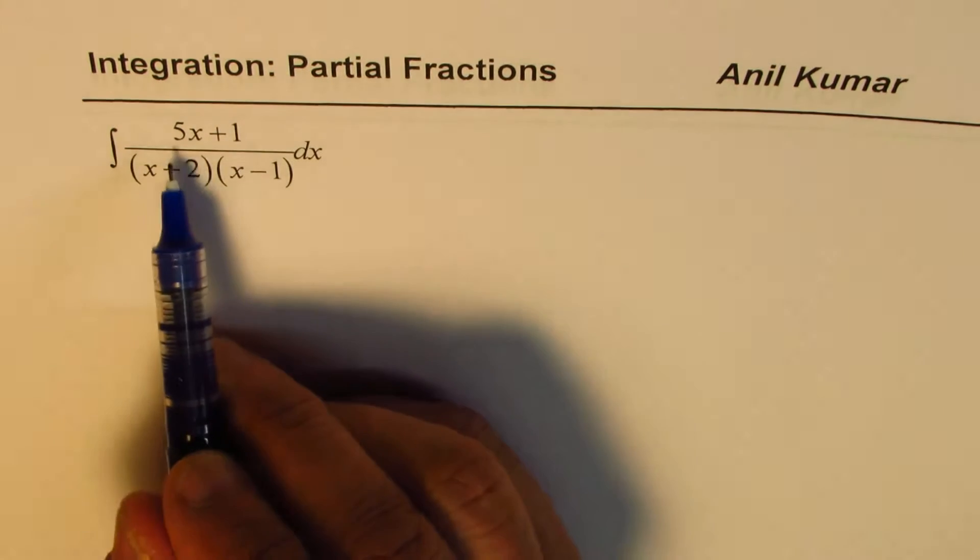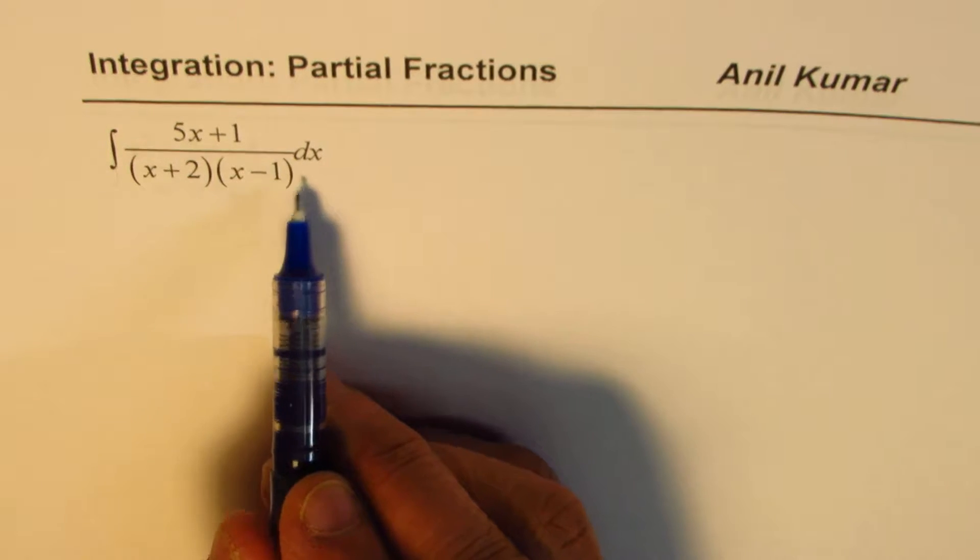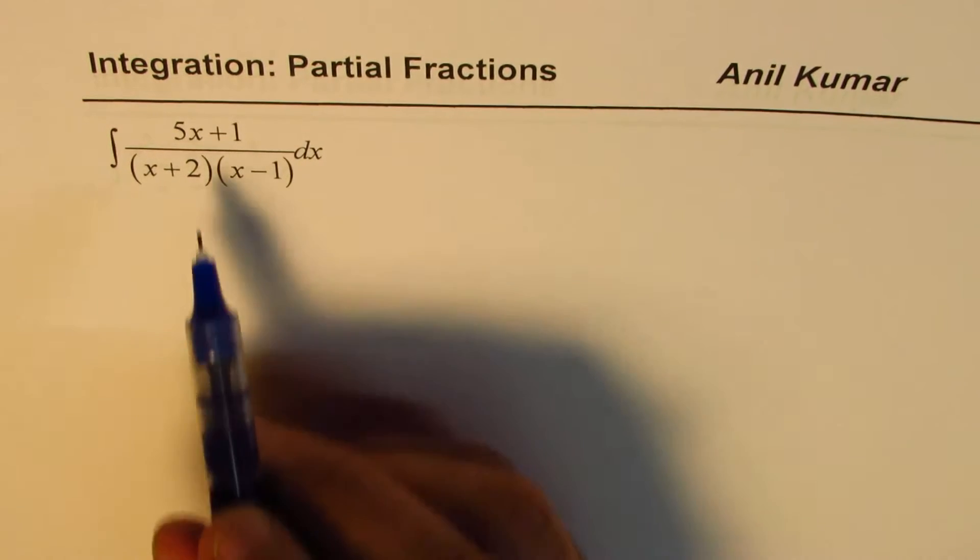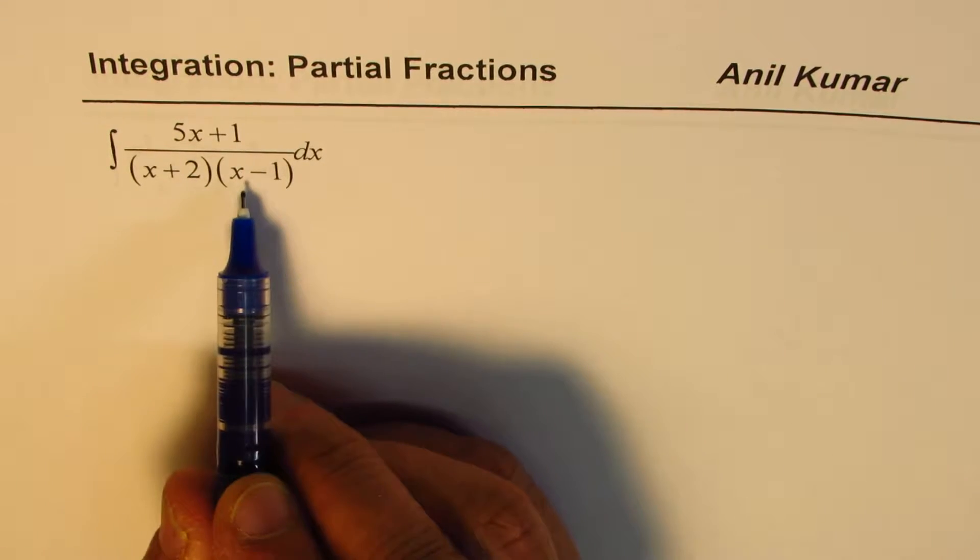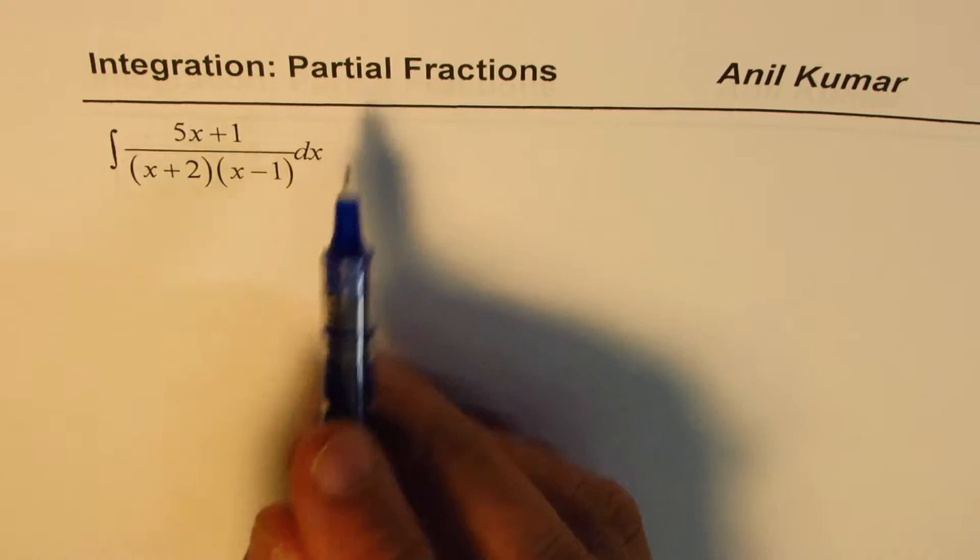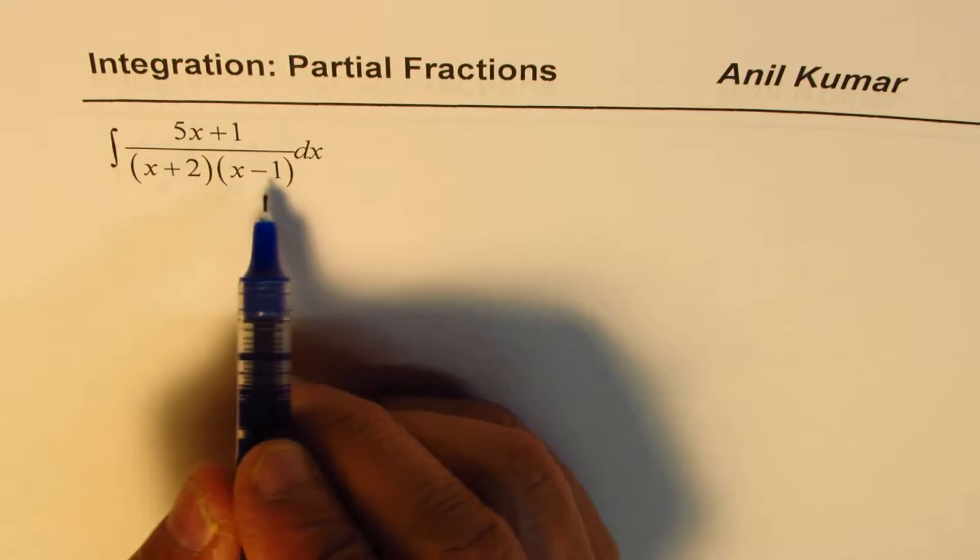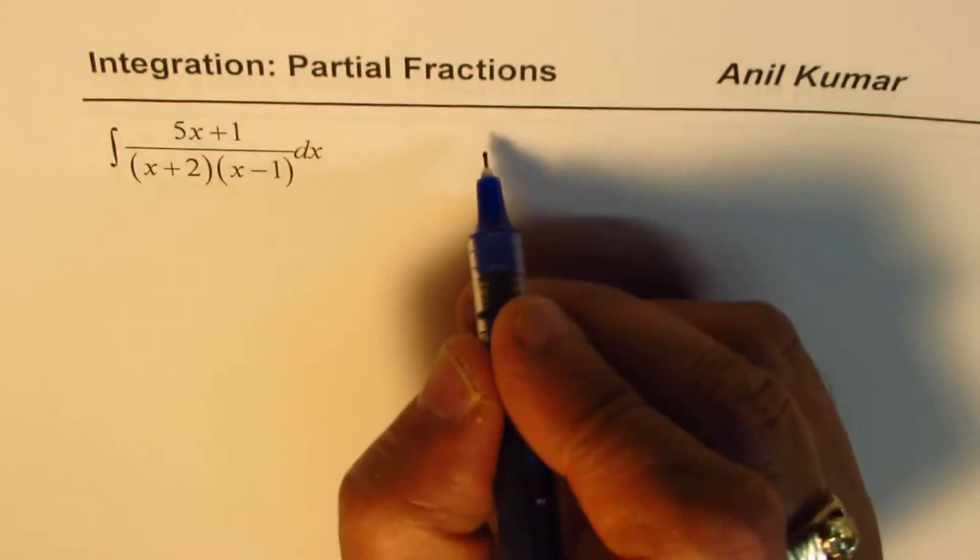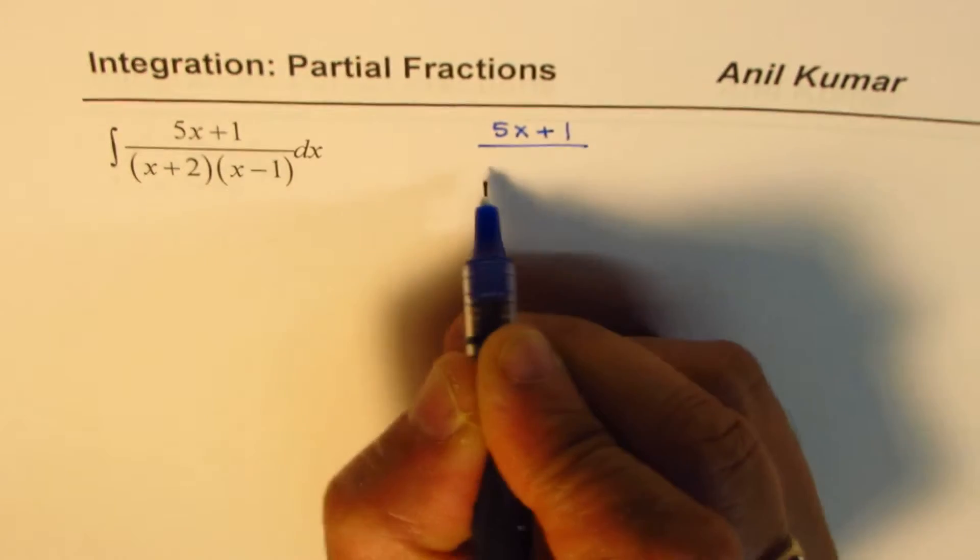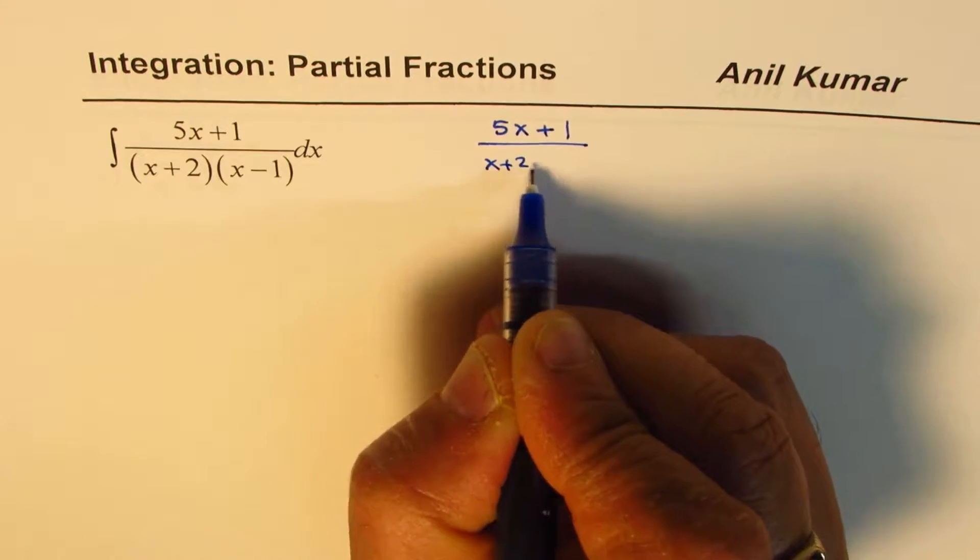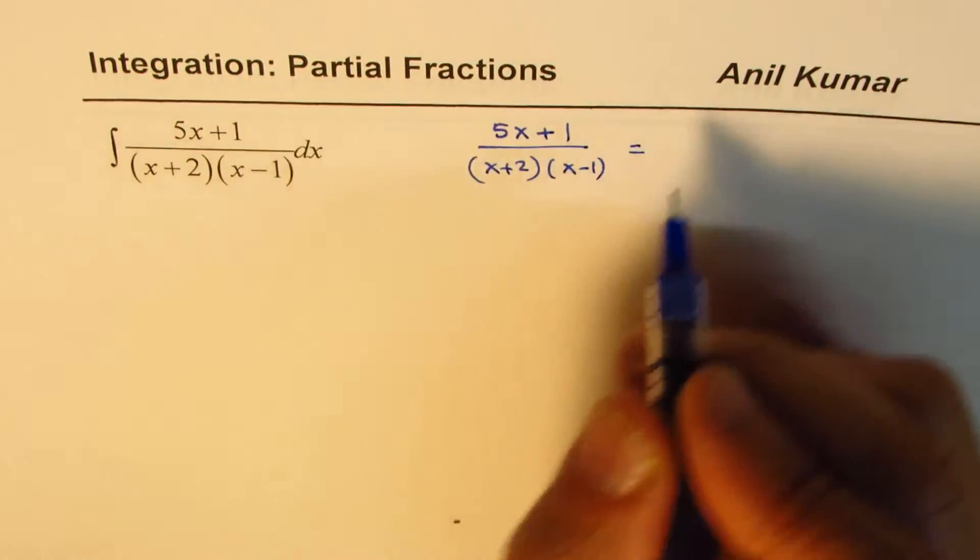We need to integrate 5x plus 1 divided by x plus 2 times x minus 1 dx. Now, any rational function whose denominator can be factored could be written in the form of partial fractions. So what we will do here is we'll work out this integral 5x plus 1 divided by x plus 2 times x minus 1 as partial fractions.